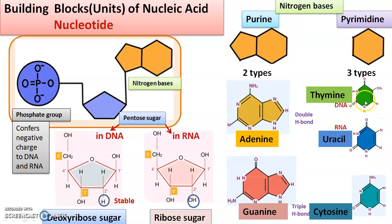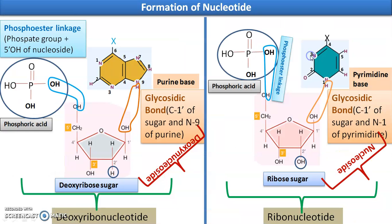Now, coming to how those three components bond together into one brick. The deoxyribose sugar when it binds with a nitrogen base — either purine or pyrimidine — the two together are called a nucleoside. Only when nitrogen base and sugar are together, you call it a nucleoside. When the phosphate group is also added — all three components — you call it a nucleotide. T for tide and T for three: three components make a nucleotide; two components make a nucleoside. The sugar and nitrogen base are always bonded by a glycosidic bond.